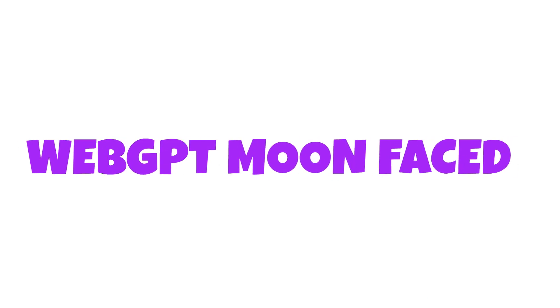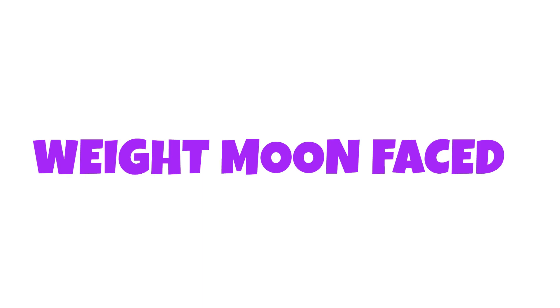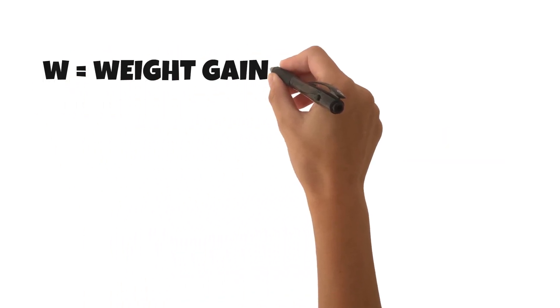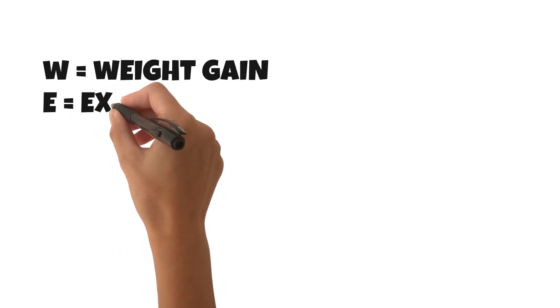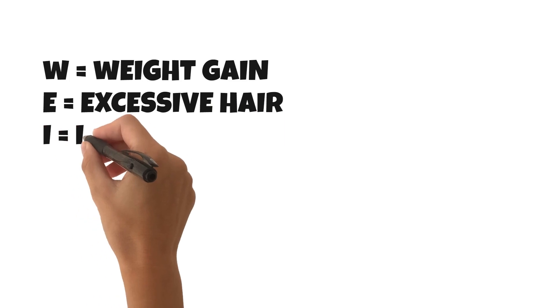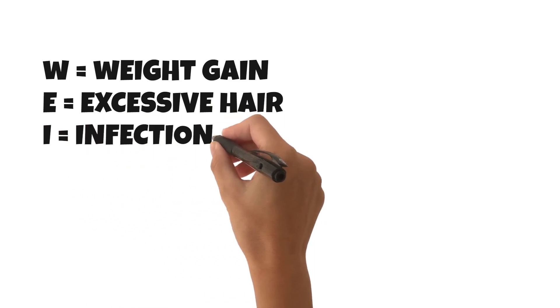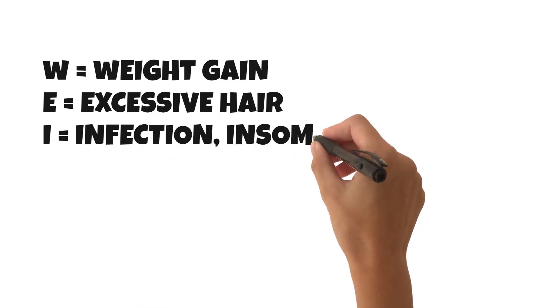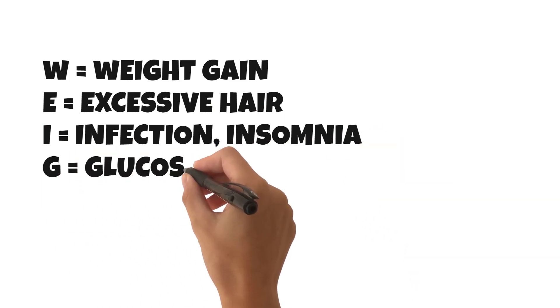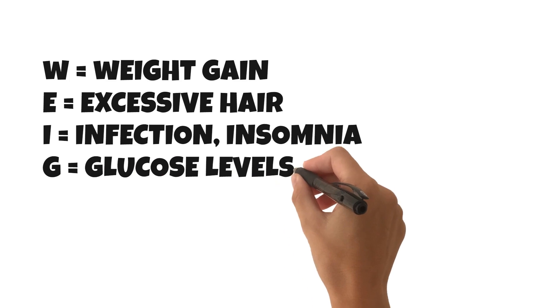W equals weight gain, particularly around the abdomen and at the back of the neck, which can lead to a buffalo hump type appearance. E equals excessive hair production, particularly in women. I — increased infections are possible, and patients can also have insomnia.